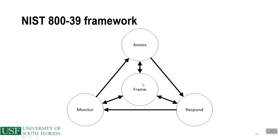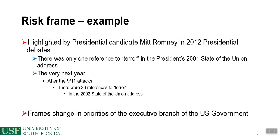An example of a risk frame is highlighted by presidential candidate Mitt Romney in the 2012 presidential debates. There was only one reference to terror in the president's 2001 State of the Union Address. The very next year, after the 9/11 attacks, there were 36 references to terror in the 2002 State of the Union Address. The frames changed the priorities of the executive branch of the U.S. government — the framing after 9/11 was focused on terror.